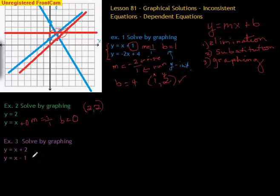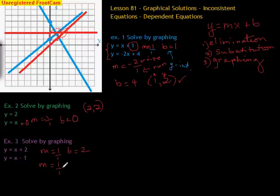Let's try the next one — solved by graphing. For the first equation, m is 1 and b is 2. For the second equation, the slope is also 1 over 1, and the y-intercept is negative 1. So both slopes are 1 — what are we thinking here? They're both going to slant the same amount.